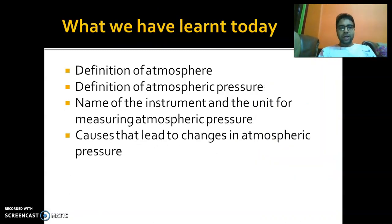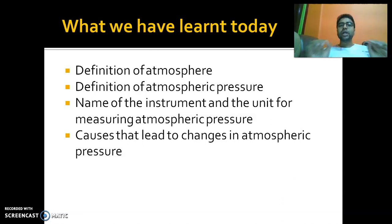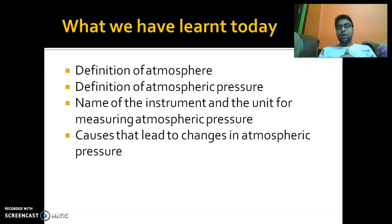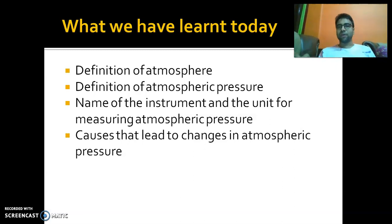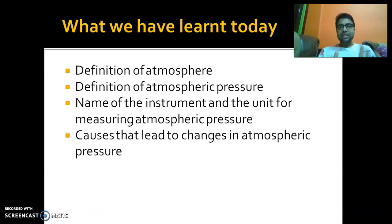Let us revise what we have learnt today. We have learnt the definition of atmosphere and atmospheric pressure, the name of the instrument for measuring air pressure, the unit for measuring air pressure, and the reasons that cause atmospheric pressure to change. We also learned about the gases in the atmosphere. Nitrogen is the most abundant gas in the atmosphere, and ozone is the gas that acts as a protective umbrella.